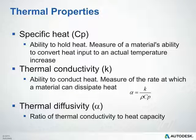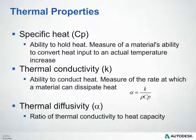Some common thermal properties that we should be aware of are specific heat — the ability to hold heat — which is basically a measure of a material's ability to convert a heat input to an actual temperature increase. It can be approximated by measuring the heat required to raise the temperature of one kilogram of a substance by one degree Celsius or one degree Kelvin. Thermal conductivity is the ability to conduct heat, or the measure of the rate at which a material can dissipate heat. Thermal diffusivity is the ratio of thermal conductivity to heat capacity — a substance with a high thermal diffusivity will rapidly adjust its temperature to that of its surroundings because it conducts heat quickly relative to its thermal bulk.